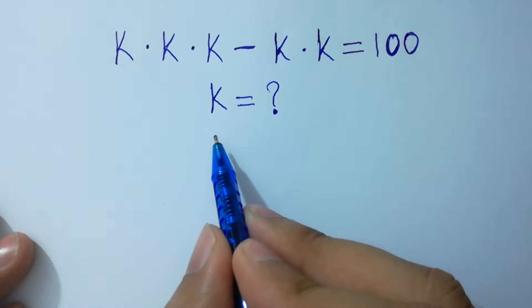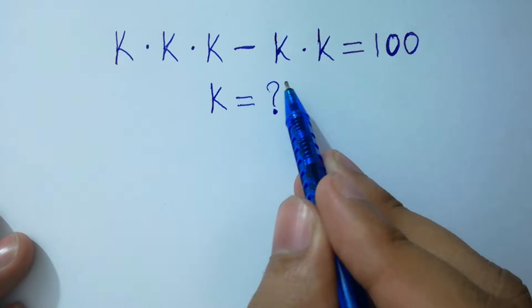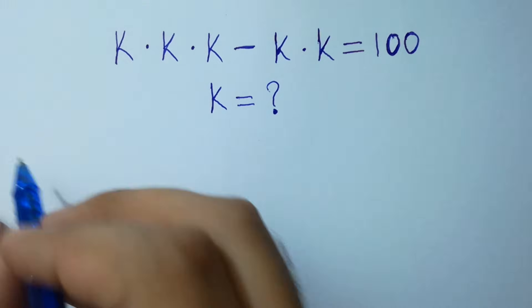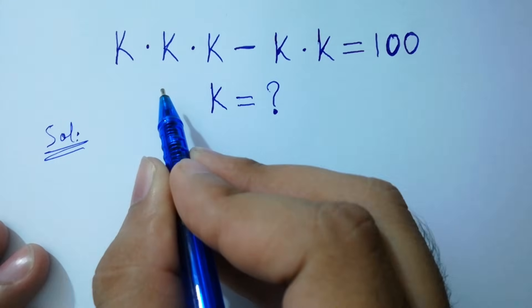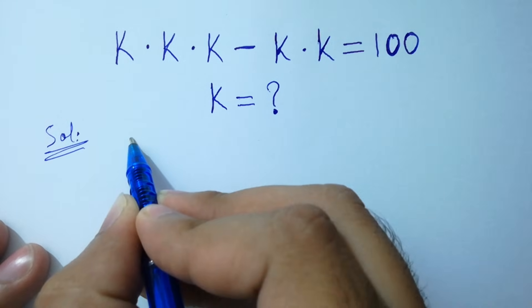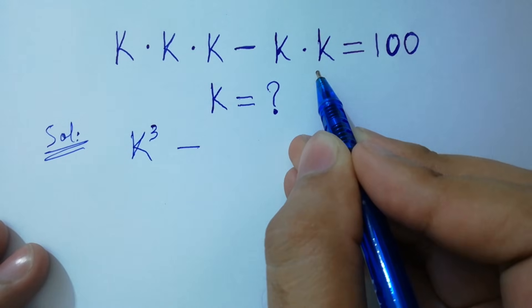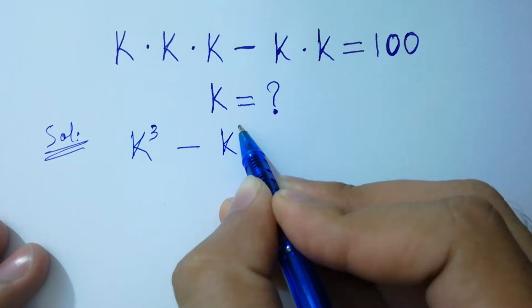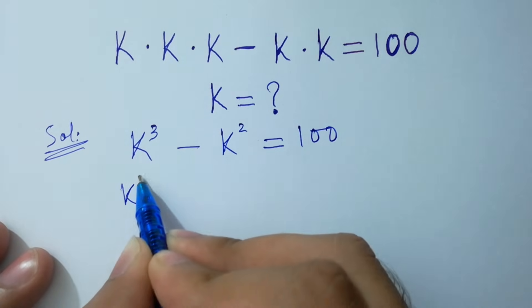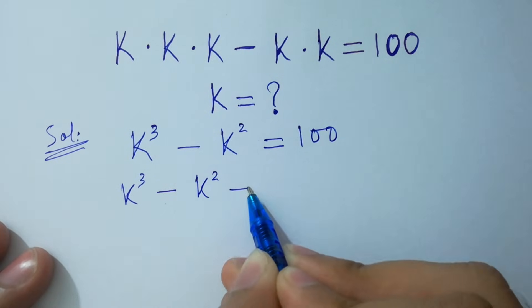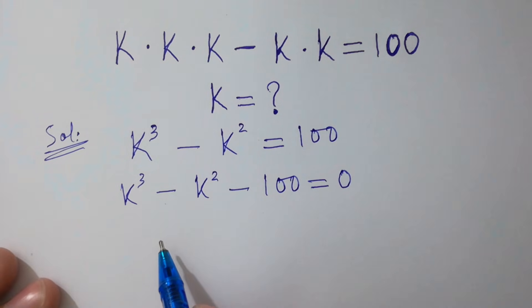Hello friends, find the value of k if k times k times k minus k times k equals 100. Let's solve it. k times k times k is the same as k cubed, minus k times k is the same as k squared, equal to 100. So we have k cubed minus k squared minus 100 equals 0.